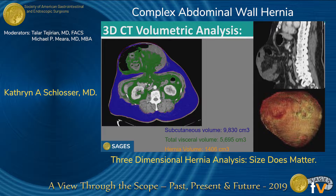This is an example. In blue, you see the patient's subcutaneous fat with a total volume of 9.8 liters. In green, the total abdominal volume, including hernia and intra-abdominal, is 5.6 liters. In orange, you see that this patient's hernia volume was 1.4 liters.